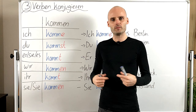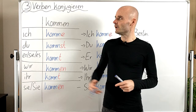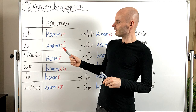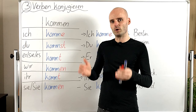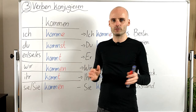Hello guys and welcome back to Easy German with Benjamin. Today we are going to take a look at how we conjugate verbs in German. Verbs — in English these are words like to go, to eat, to make, to see, to drive. These are verbs and they are the only words that we conjugate in any language.